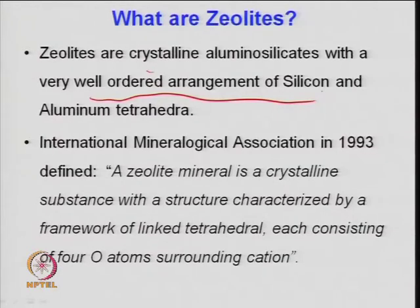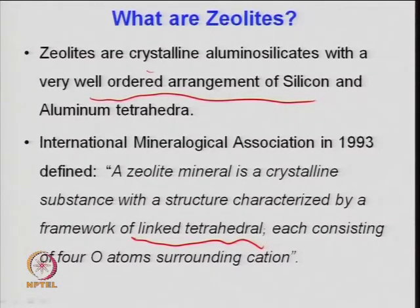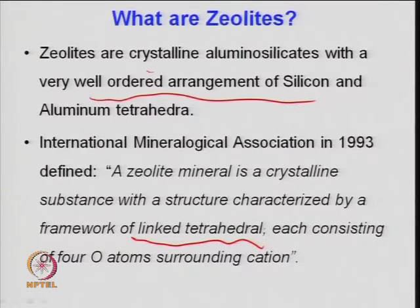The definition states that a zeolite mineral is a crystalline substance with a structure characterized by a framework of linked tetrahedra — each consisting of 4 oxygen atoms surrounding a cation (Al or Si). When aluminum is connected to silicon it provides a kind of electronegativity to the system, resulting in a net negative charge.